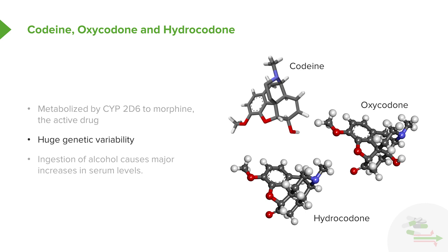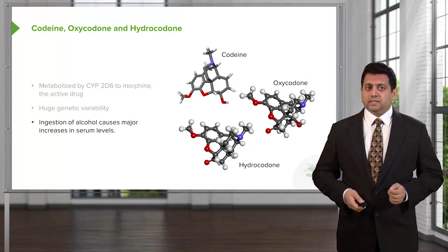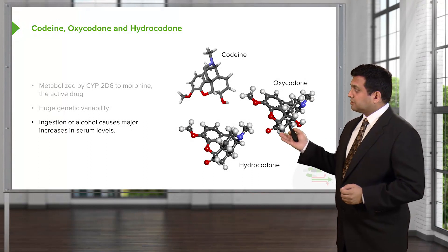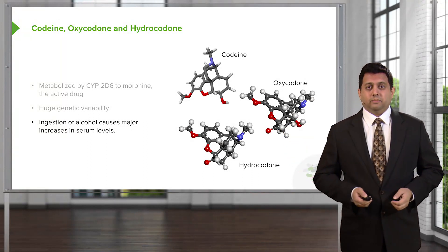There is a huge genetic variability with respect to how we metabolize cytochrome 2D6. If you go back to your pharmacokinetic lecture, you will see that there are many genes that can encode for the metabolism of this, and so different people will have different ways of metabolizing this drug. Ingestion of alcohol causes major increases in serum levels, so when you prescribe patients codeine, we want to get them to abstain from alcohol.